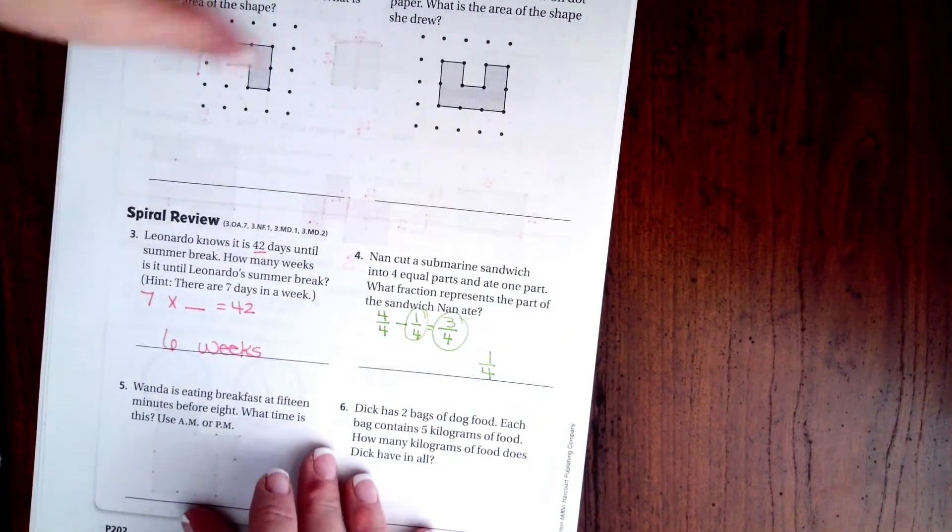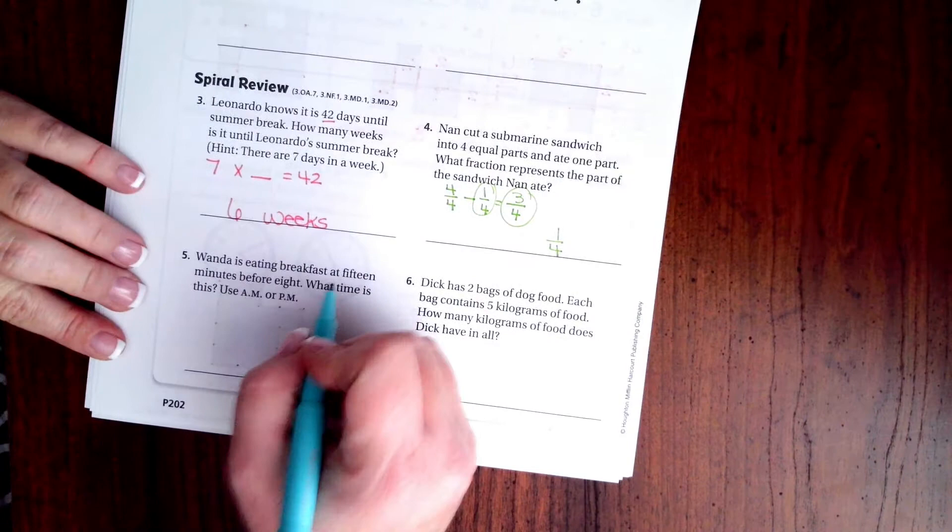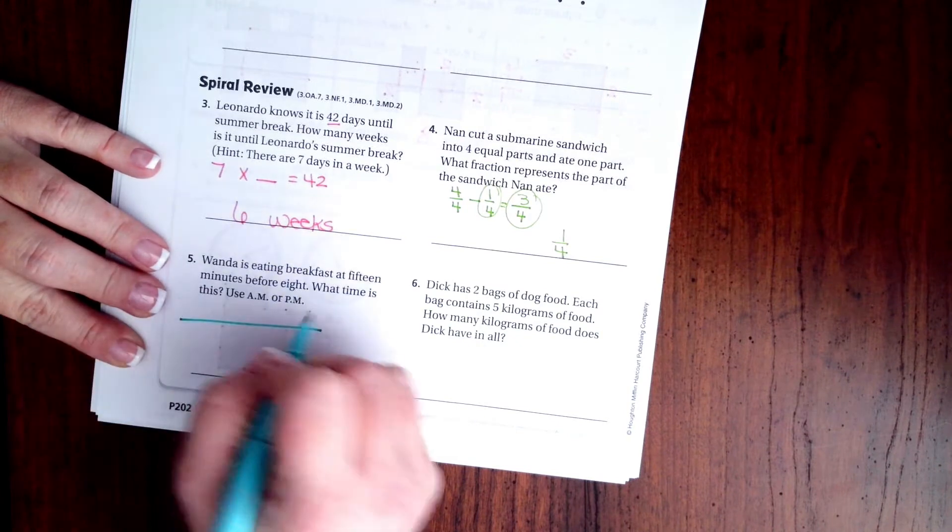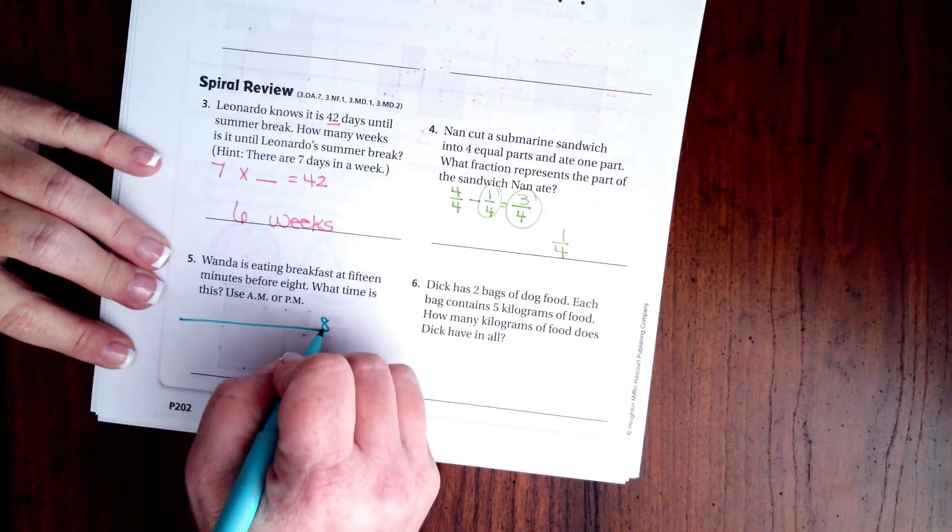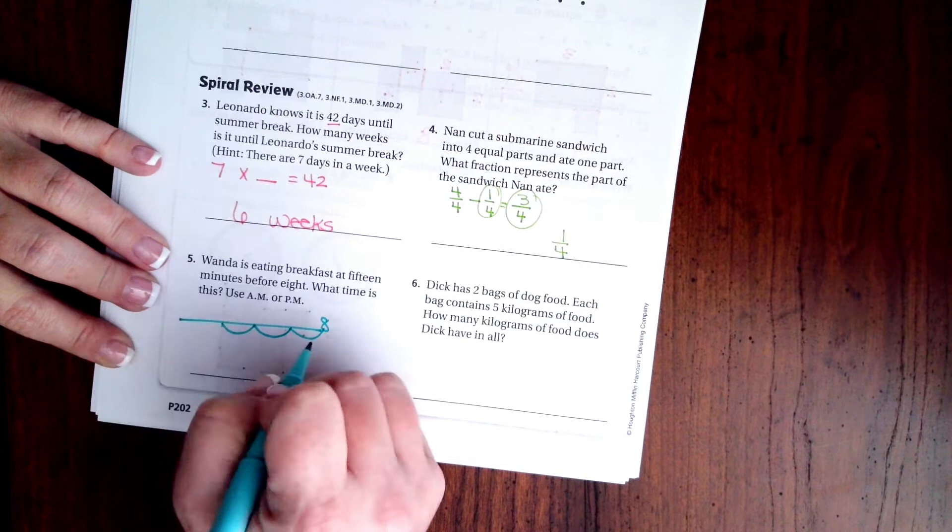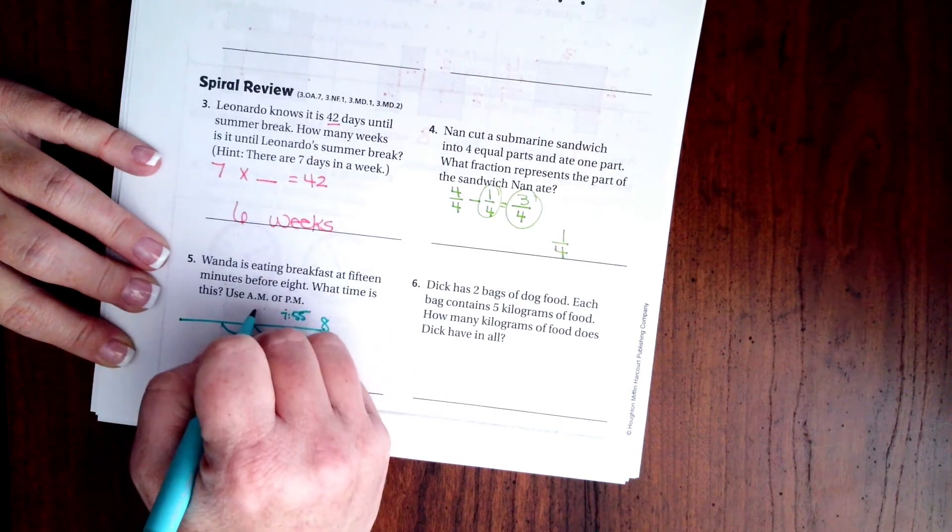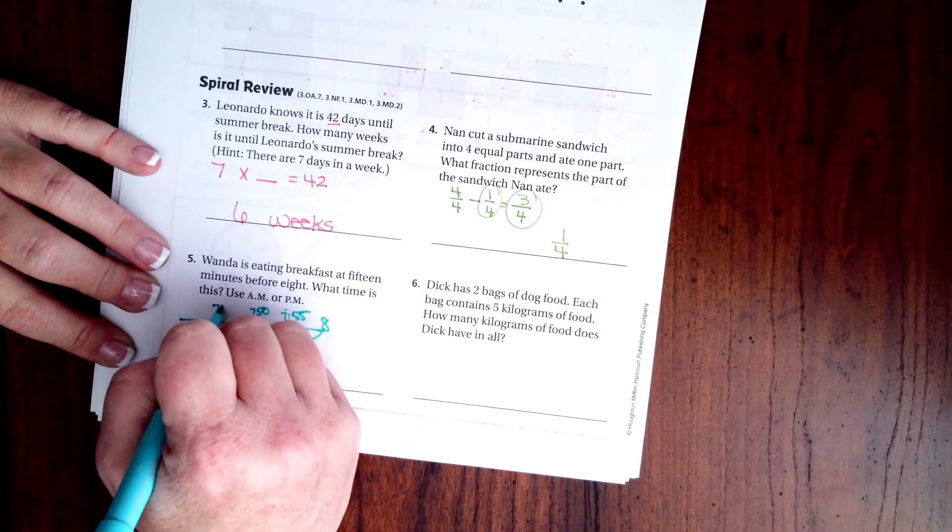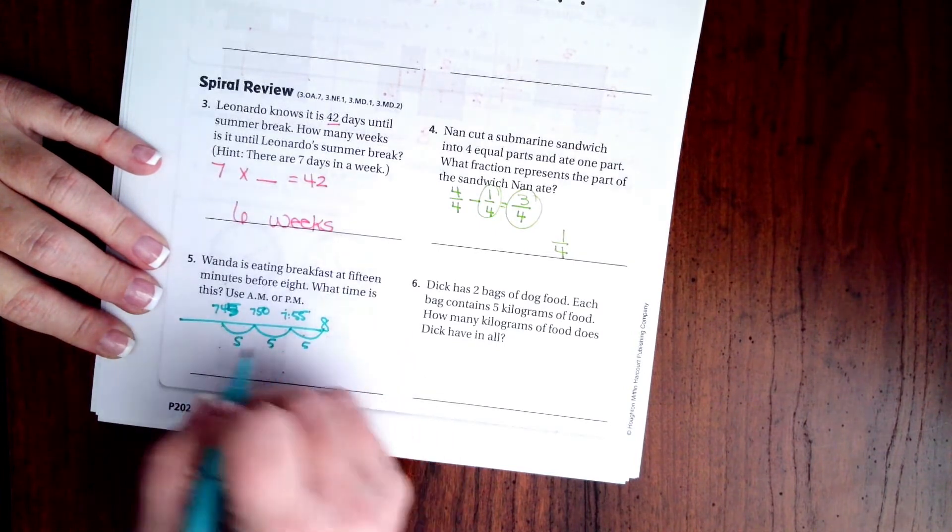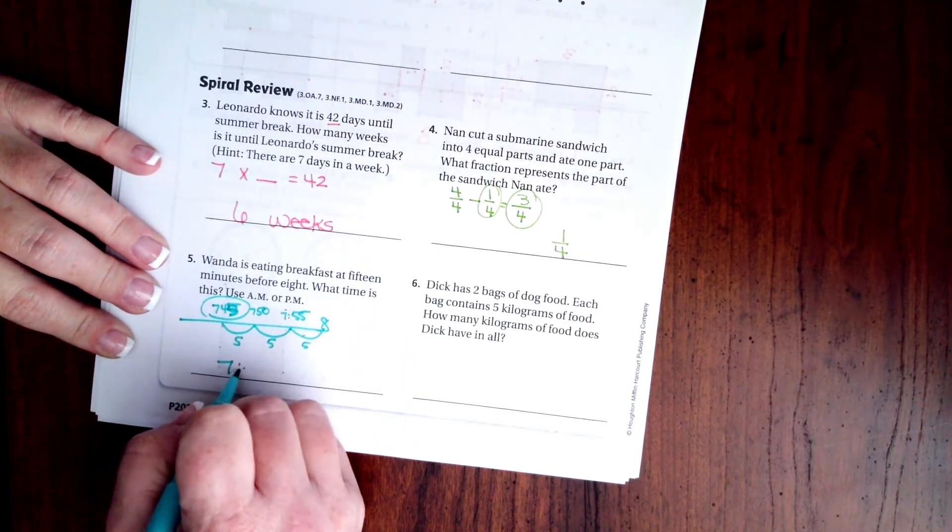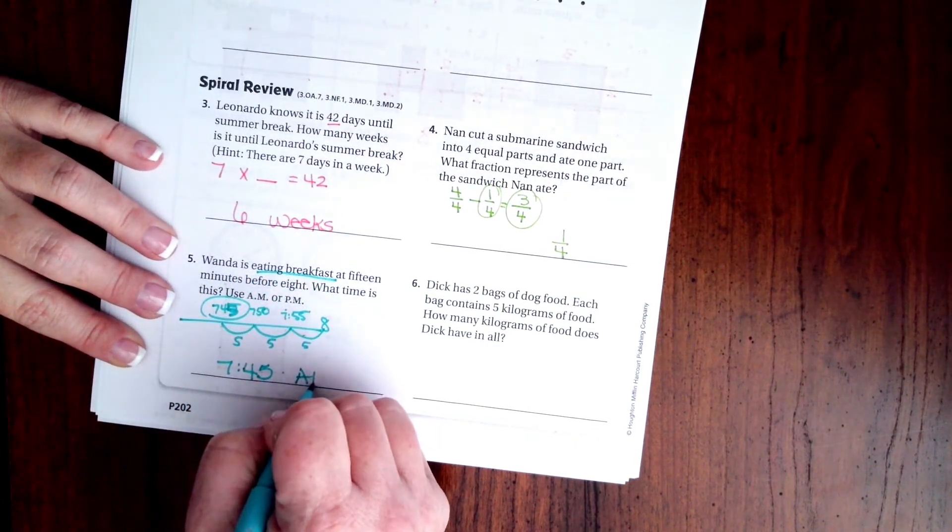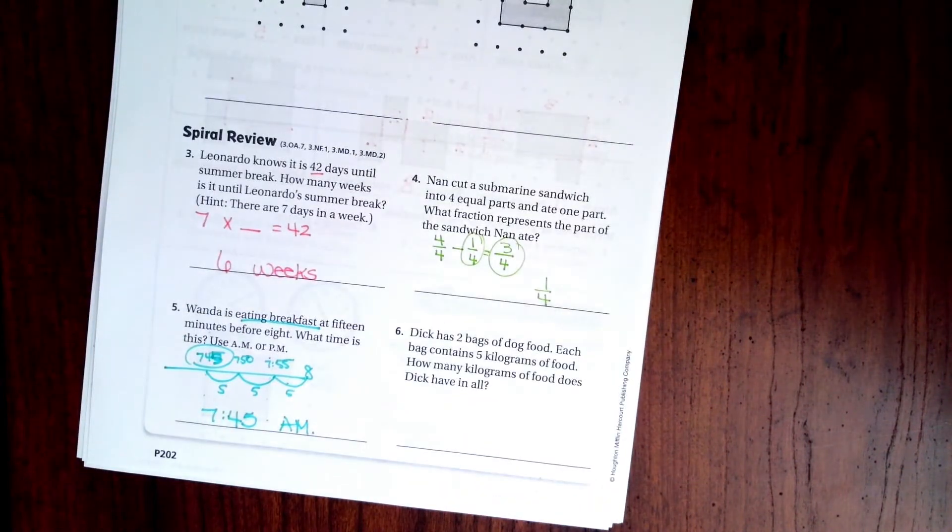All right. Wanda is eating breakfast at 15 minutes before 8 o'clock. What time is this? So I'm going to go, here's 8 o'clock, and I'm going to go 15 minutes. I'm going to do it at 5 minutes. So I know that 3 times 5 is 15. So 7:55, 7:50, 7:45. So 5, 5, and 5. That's 15. We end up at 7:45. And it tells us he is eating breakfast. So we know that would be a.m.